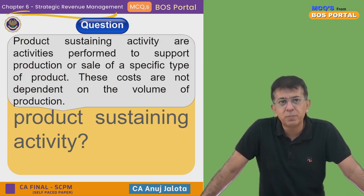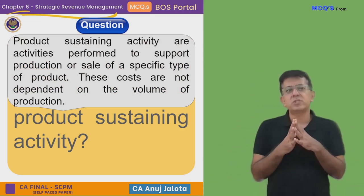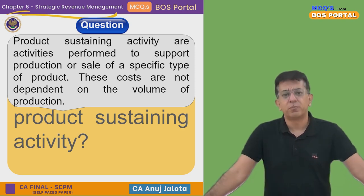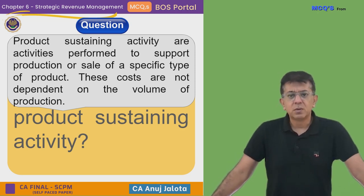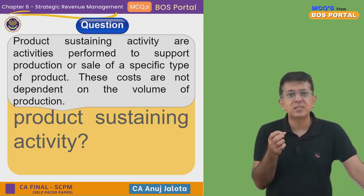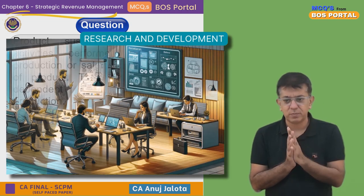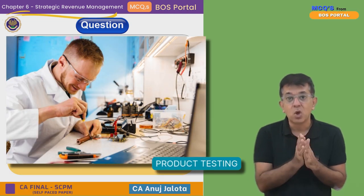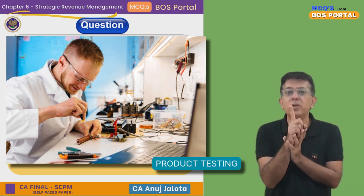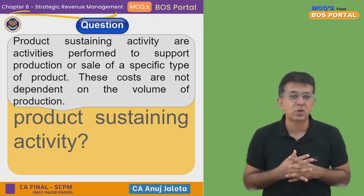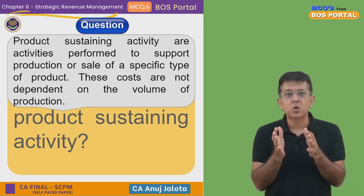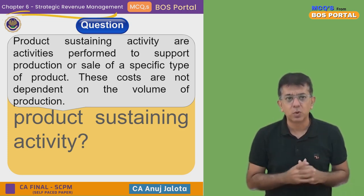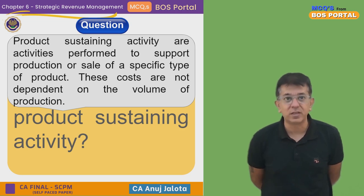Product sustaining activities are activities performed to support the production or sale of a specific type of product. These costs are not dependent upon the volume of production. For example, before producing a product, you need to do research and development, make designs, and perform testing. All these routines are done only once — they are not dependent on how many units you produce. They are not like direct material or direct labor.